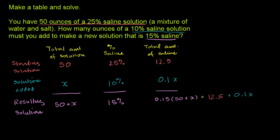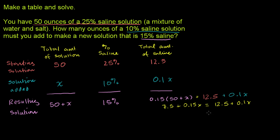Because 15% of the total volume has to equal the sum of the saline from both parts, we have one equation and one unknown and we can solve for x. So: 0.15 times 50 is 7.5, since 0.15 times 100 would be 15. So we get 7.5 plus 0.15x equals 12.5 plus 0.1x. Now we subtract 7.5 from both sides. That cancels out, leaving us with 0.15x equals 5 plus 0.1x.